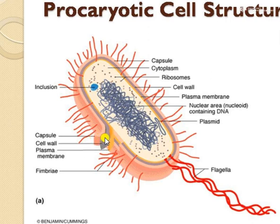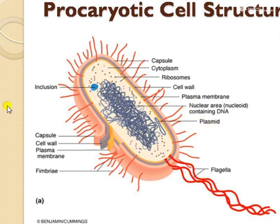After the capsule, you can see the blue color margin — this is called the cell wall. Beneath the cell wall there is the plasma membrane, ribosomes, nuclear materials, plasmids, and inclusions — all of these are present inside the cell wall.